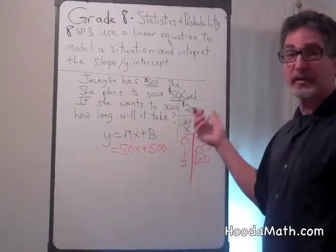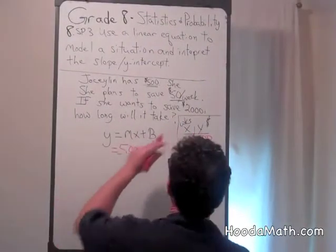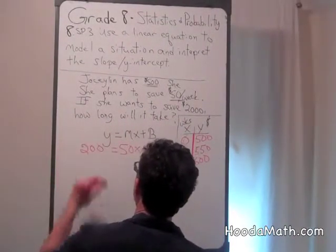But we want to know how long it takes her to save $2,000. So we put the $2,000, and we substitute that for y.